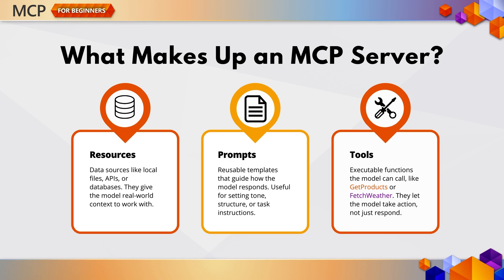Resources provide context, like documents, structured data, or files. Prompts shape the interaction, guiding the model through templates or workflows. And tools let the model take action — calling functions, hitting APIs, or performing calculations. Think of it like this: resources are what the model knows, prompts are how it's asked, and tools are what it can do.